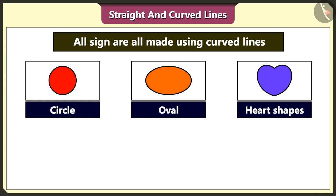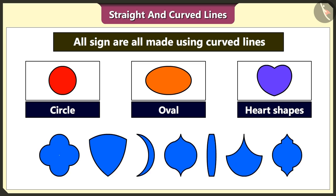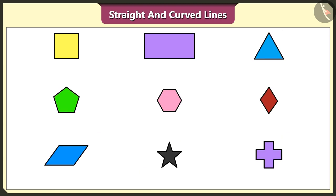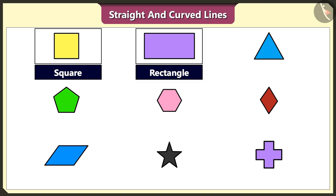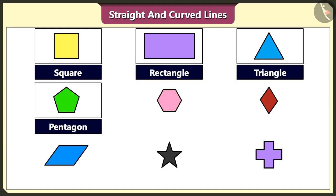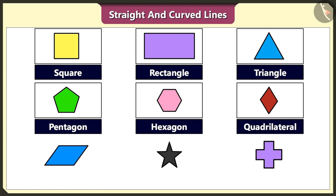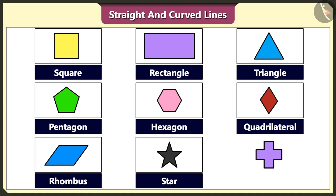We can make so many more shapes using curved lines. Yes, and we can make square, rectangle, triangle, pentagon, hexagon, quadrilateral, rhombus, star and plus using straight lines.